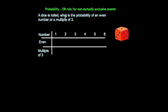Now let's look at what happens when we use the OR rule for non-mutually exclusive events — in other words, when they can happen at the same time. A typical question: a dice is rolled — what is the probability of an even number or a multiple of 3?